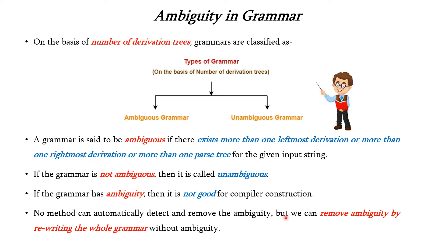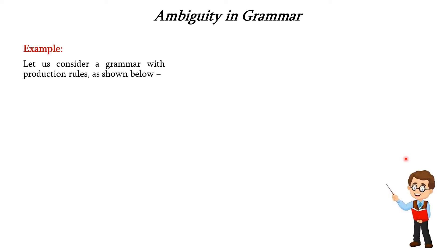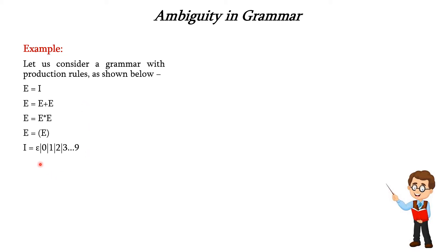Now let us see about ambiguous grammar with an example. We are provided with the production rules: e → i, e → e plus e, e → e star e, e → (e), and i → epsilon, or any of the digits from 0 to 9.